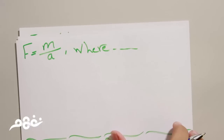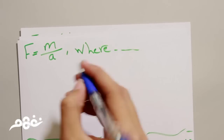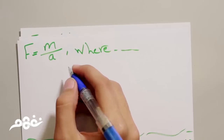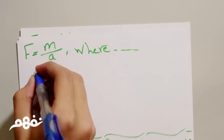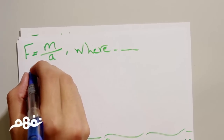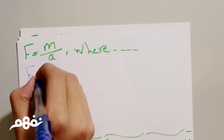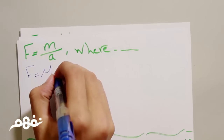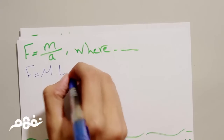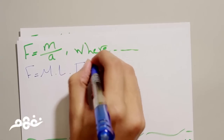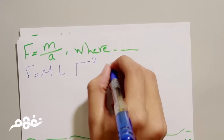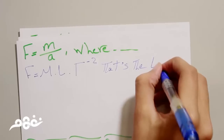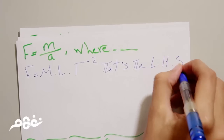The third equation we have is to prove that force equals mass times acceleration. Force equals mass times length times time to the power of negative 2. That is the left-hand side.